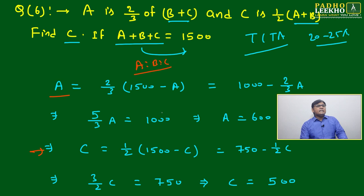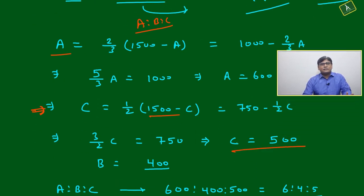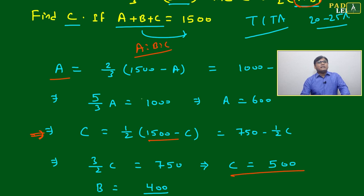If they are asking A ratio B ratio C, then you have to find all these. But if they are asking only C, then C equals half times A plus B, which equals 1500 minus C. Once you manipulate in this way, you will get the value of C.